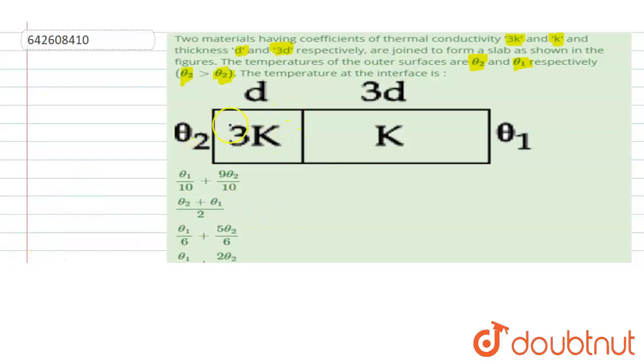We are given the two slabs having thermal conductivity 3k and k. We can replace it with the equivalent electrical circuit denoting the resistances. Let's say this is the resistance R1 and this is the resistance R2.